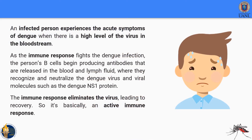An infected person experiences the acute symptoms of dengue when there is a high level of the virus in the bloodstream. The immune system then eliminates the virus, leading to recovery — this is essentially an active immune response.